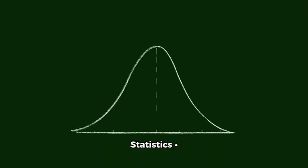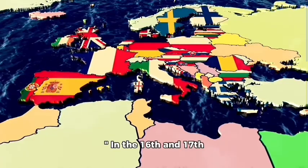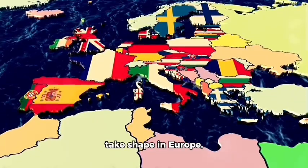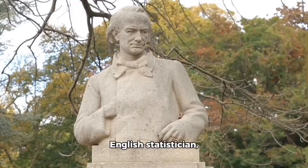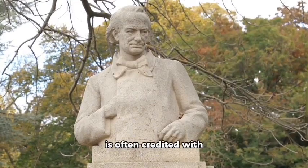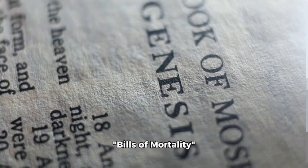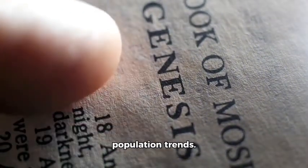The birth of modern statistics, 16th-17th centuries: the term statistics is derived from the Latin word status, meaning state or condition. In the 16th and 17th centuries, the discipline began to take shape in Europe, focusing on state affairs and demography. John Graunt, an English statistician, is often credited with producing the first statistical study in 1662, analyzing the bills of mortality in London to make inferences about population trends.